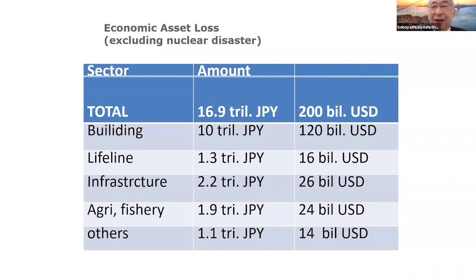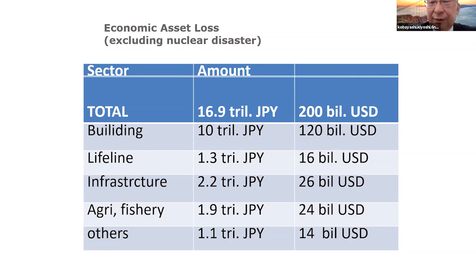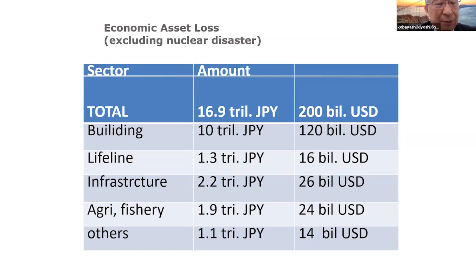This table summarizes the economic asset loss in Japanese yen and US dollars. This slide only includes earthquake and tsunami losses — nuclear disasters are excluded. Building asset damage alone amounted to 10 trillion Japanese yen, followed by losses in infrastructure, agriculture, fishery, and others.